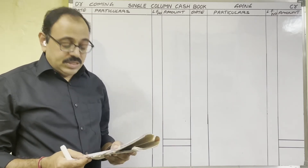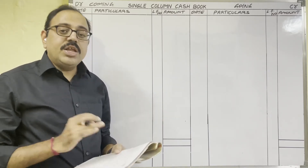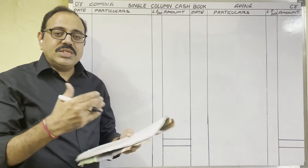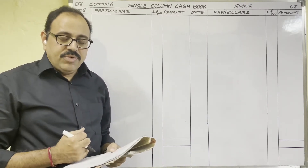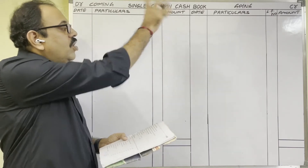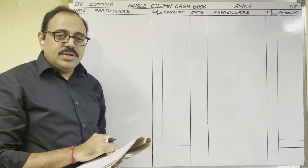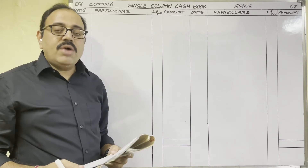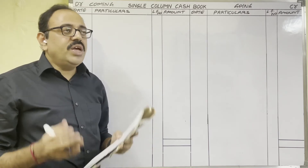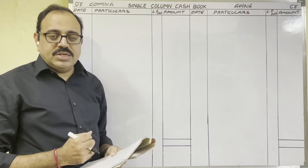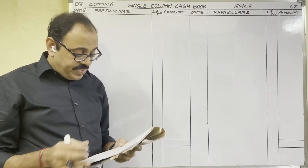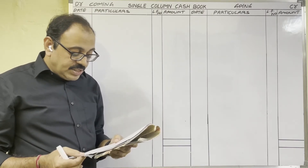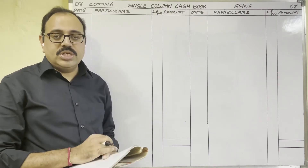Let us start the problem: prepare the single column cash book of Messrs Manasvi Traders from the following particulars. The question is given for the month of January. We have to record the given business transactions in the single column cash book. Our assumption is that we are the accountant of this organization, so think from their point of view.